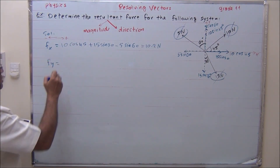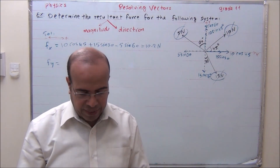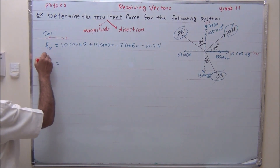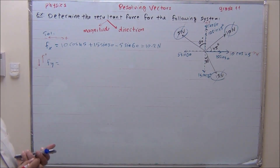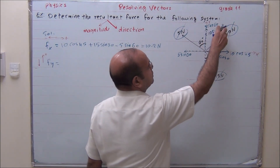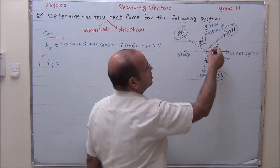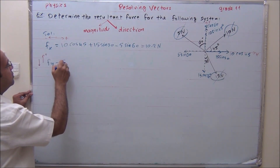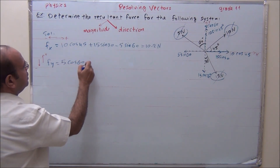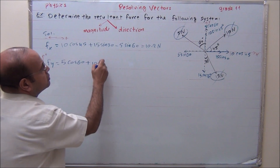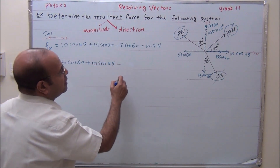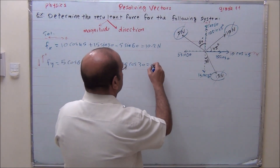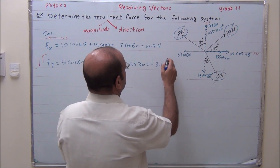Fy is the sum of forces in the y-axis. Upward is positive, downward is negative. Upward forces are 5 cosine 60 and 10 sine 45. Downward is 15 cosine 30. So we write 5 cosine 60 plus 10 sine 45 minus 15 cosine 30. The answer is negative 3.4 Newton.